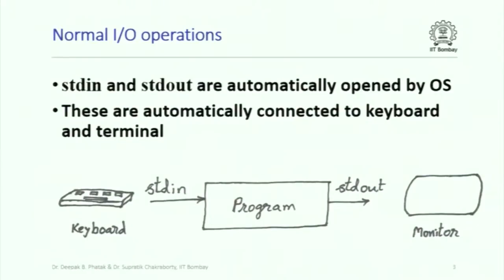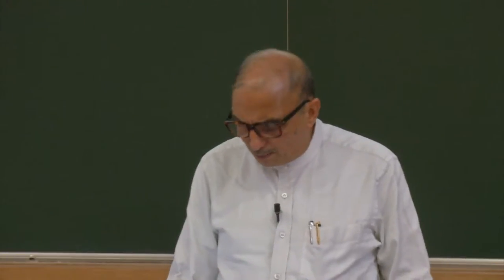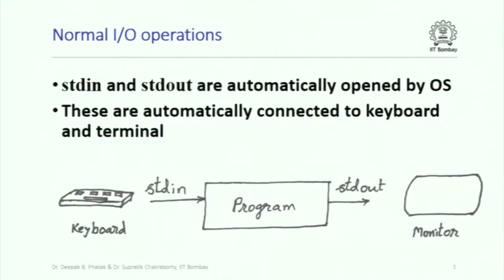The normal input/output we do presumes that cin directly gets input from keyboard and cout directly produces output on monitor, but that is not strictly true. All input/output inside a computer happens through the notion of a file. The operating system automatically makes available to you two files: one is called stdin for standard input, and the other is called stdout for standard output. Whenever you start a program, these two files are created, opened, and made available by the operating system.